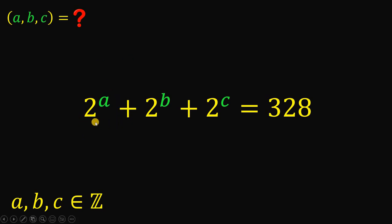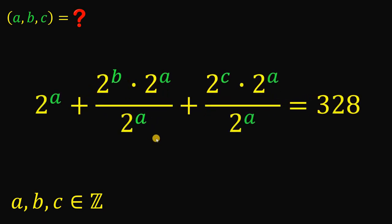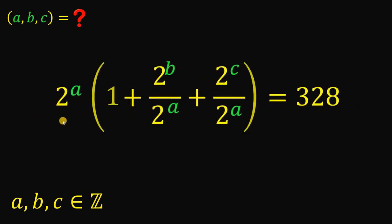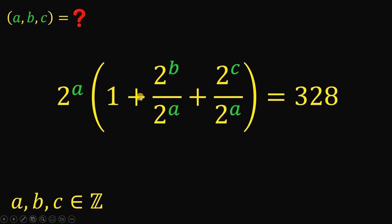What we're going to do here is to factor out 2 raised to A. But 2 raised to B doesn't have a factor of 2 raised to A, and 2 raised to C doesn't have a factor of 2 raised to A either. So what we're going to do is to multiply 2 raised to B and 2 raised to C each by 2 raised to A over 2 raised to A. Now there is a factor of 2 raised to A on all of these terms, so we can factor out 2 raised to A. This gives us 2 raised to A multiplied by 1 plus 2 raised to B over 2 raised to A plus 2 raised to C over 2 raised to A.